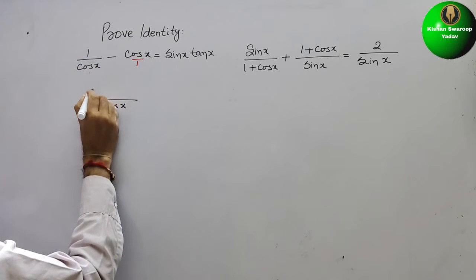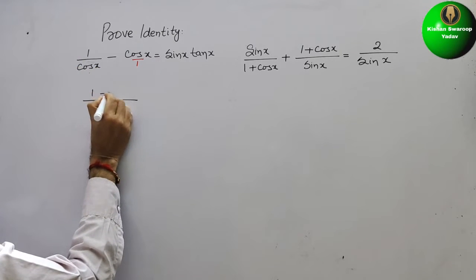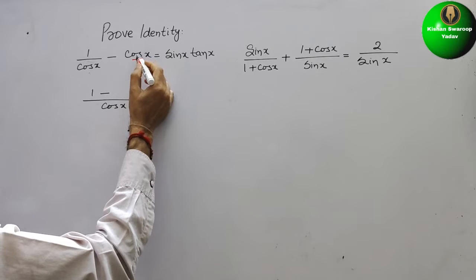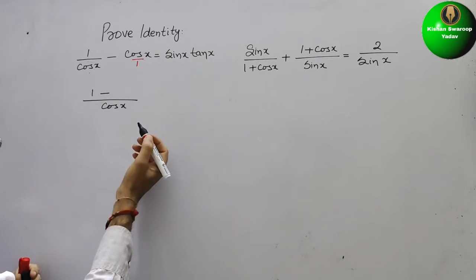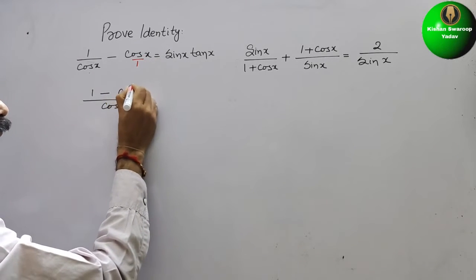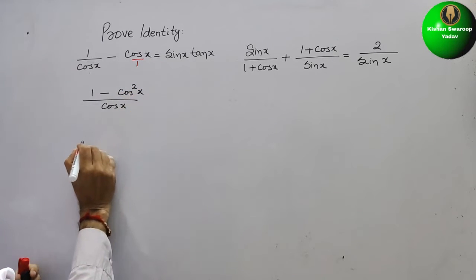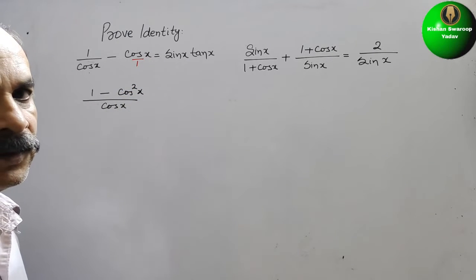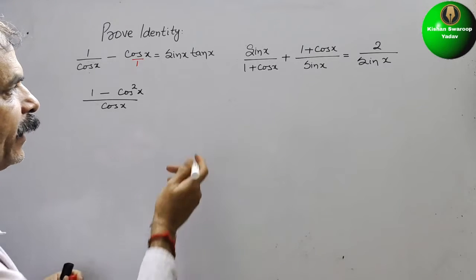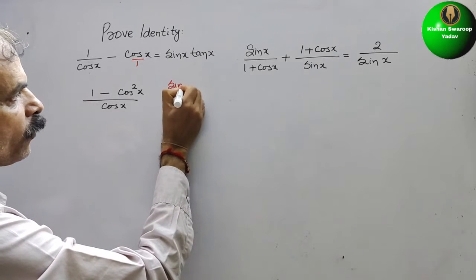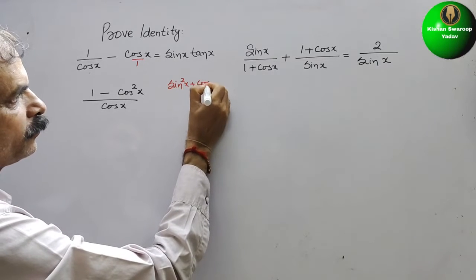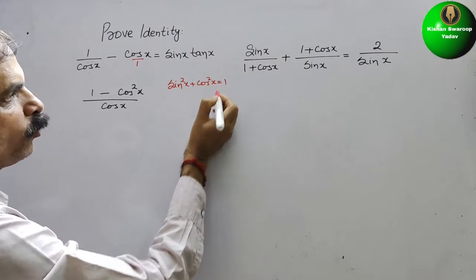So here it will come as 1 minus, here 1 is there, so into cos x. cos x into cos x is cos square x. We know one identity — that is sin square x plus cos square x is equal to 1.